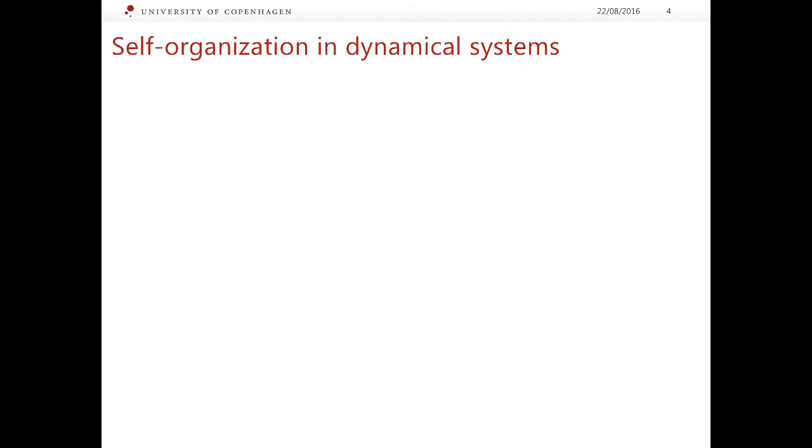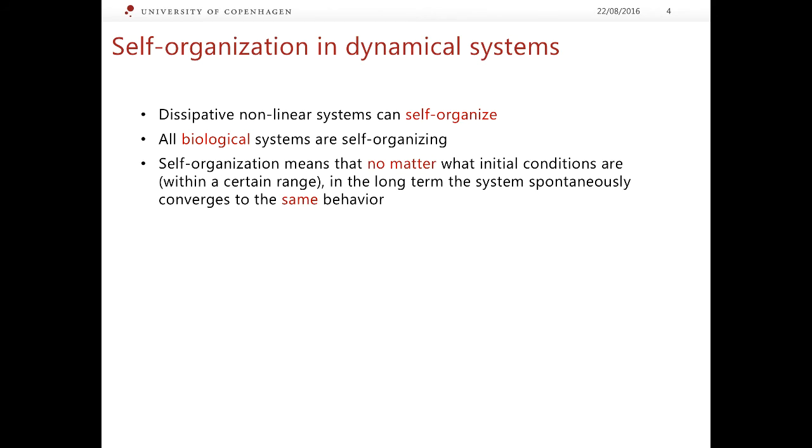In dissipative dynamical systems there is a remarkable phenomenon which is called self-organization. What does it mean that the systems can self-organize? First of all we should point out that the living systems, that biological systems are actually self-organizing as well as many chemical systems and physical systems. In the language of dynamical systems it means that we can set initial conditions in such a system more or less at random within a certain range, a certain phase volume. But in the long term the system will spontaneously converge to the same sort of behavior, to the same behavioral pattern.